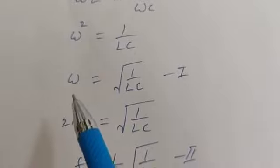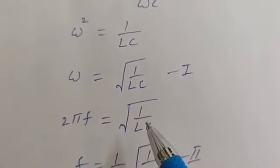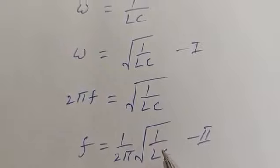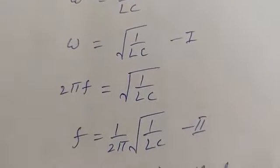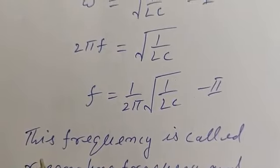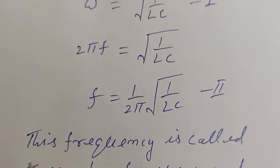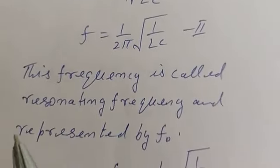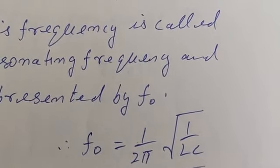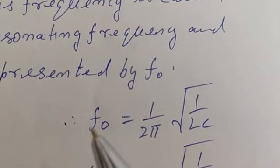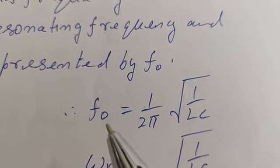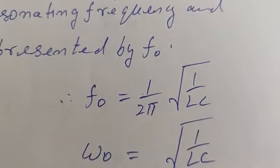We can also calculate the frequency F. Since ω equals 2πF, two pi F equals the square root of 1/LC, so F equals 1/(2π) times the square root of 1/LC. This is the frequency at which impedance is minimum, and it is called the resonating frequency. It is represented by F₀, and the angular resonating frequency is represented by ω₀.